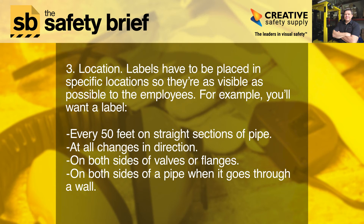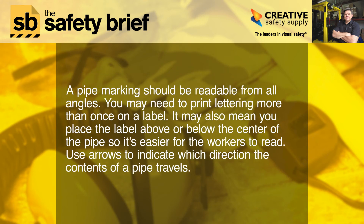Three: location. Labels have to be placed in specific locations so they're as visible as possible to employees. For example, you'll want a label every 50 feet on straight sections of pipe, at all changes in direction, on both sides of valves or flanges, and on both sides of a pipe when it goes through a wall.